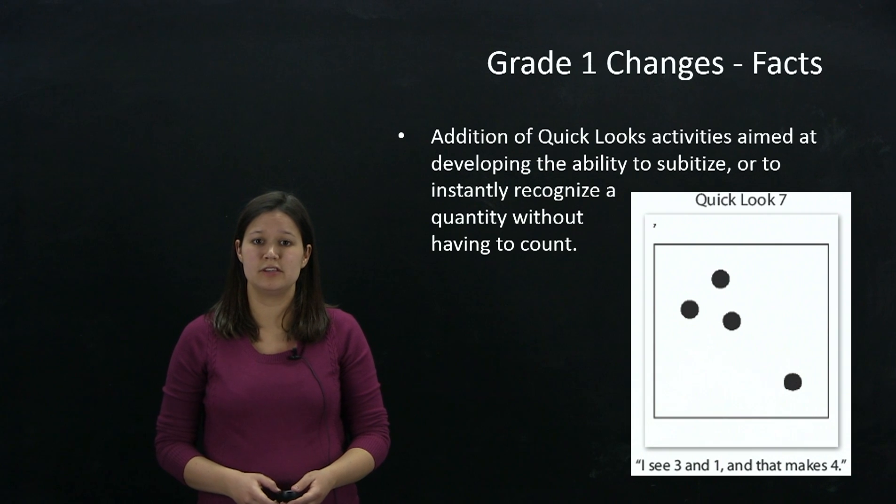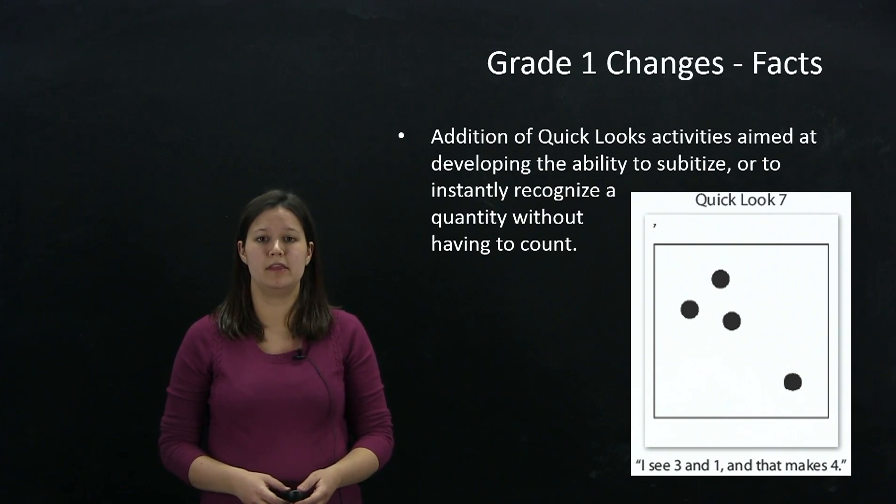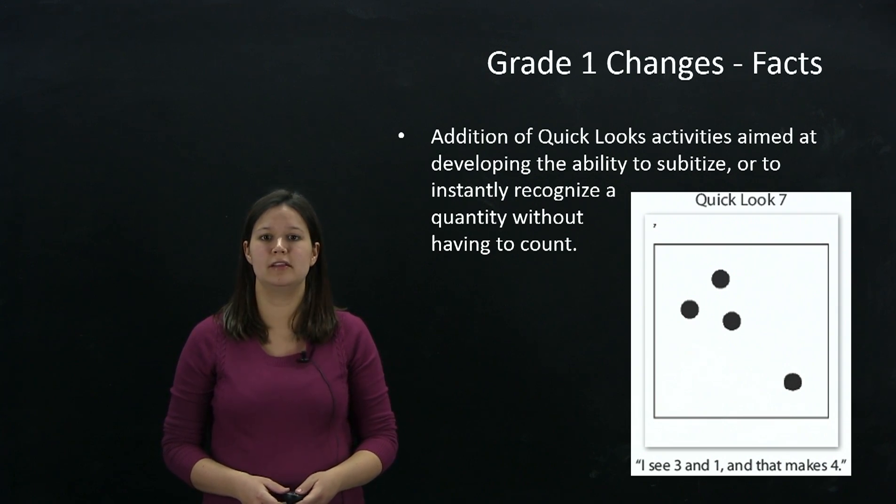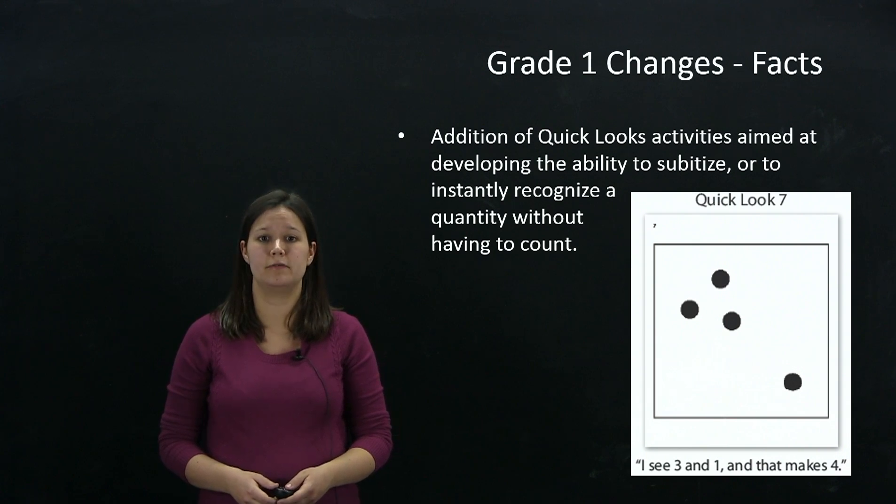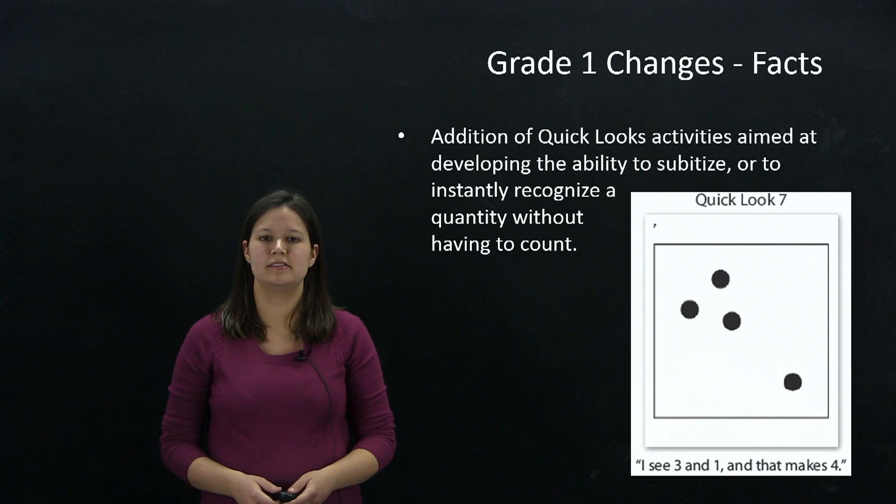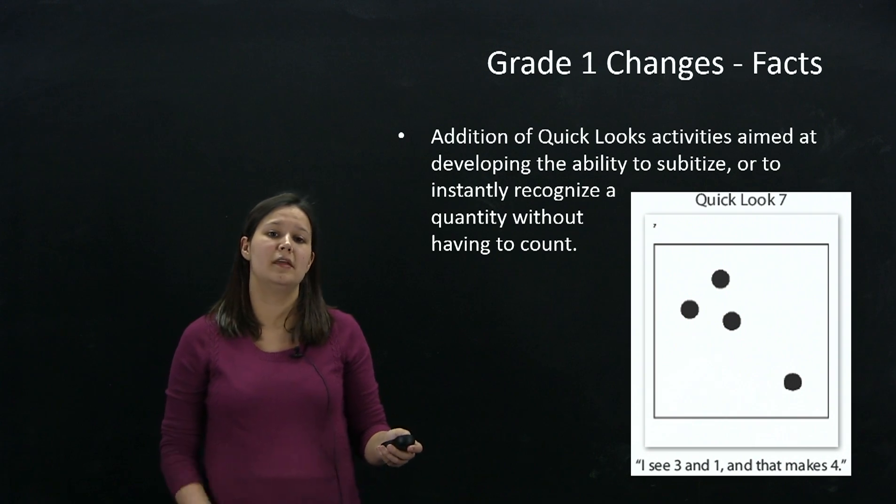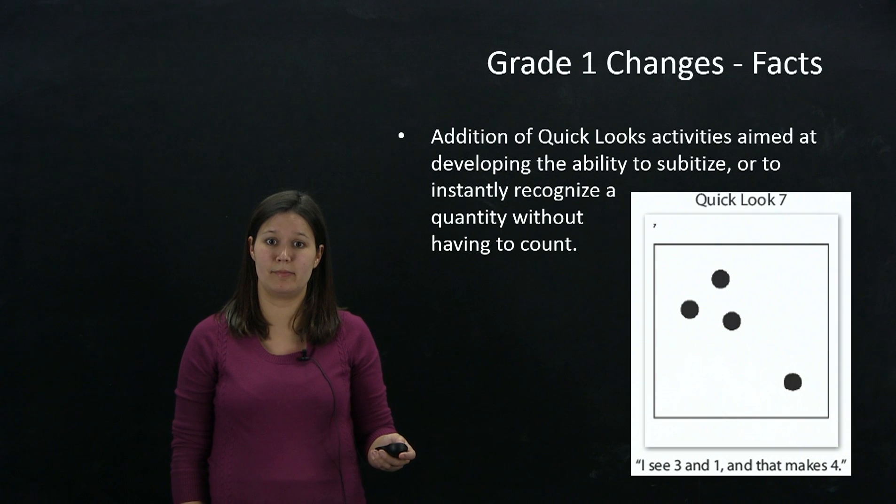There's also been quite a few changes to the facts sequence, beginning with the addition of quick looks exercises. Quick looks help students with the ability to subitize, or instantly recognize quantities without having to count, which is foundational for facts understanding. Quick looks exercises include things like dot patterns, 10 frames, and double 10 frames, and are found throughout Grade 1 Everyday Mathematics 4.